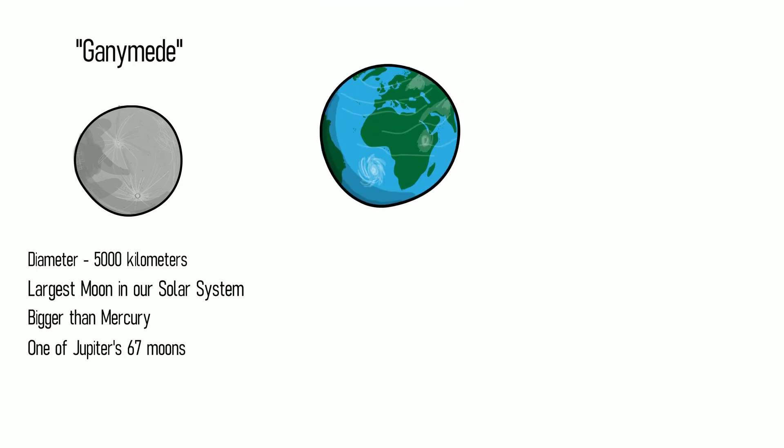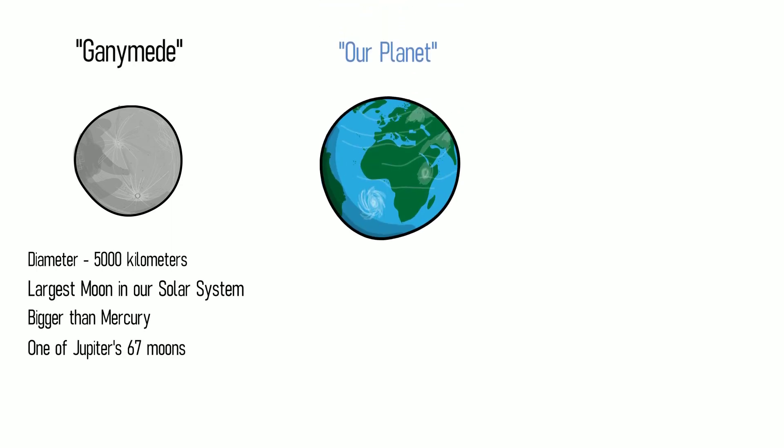The planet you're currently inhabiting is a huge sphere almost 13,000 kilometers in diameter. If you were to go around the entire circumference of the Earth by walk, it would take you nearly a year to complete the journey. It's that big.